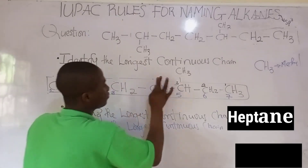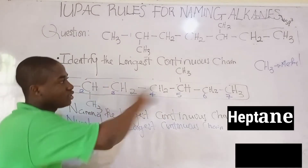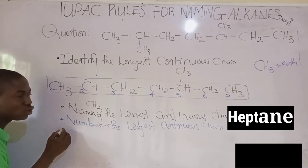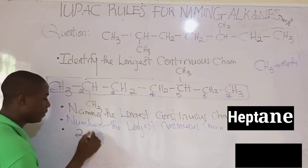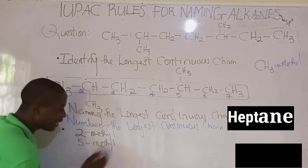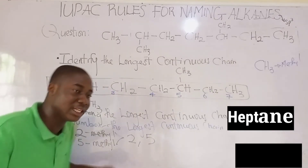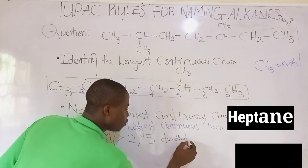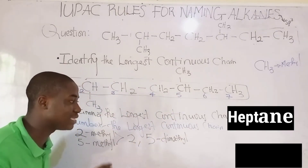We've now numbered the longest continuous chain. The substituent at carbon 2 is methyl, and the substituent at carbon 5 is also methyl. Since both substituents are methyl groups, we combine them: the positions are 2 and 5, and because there are two methyl groups we use the prefix 'di', giving us 2,5-dimethyl.